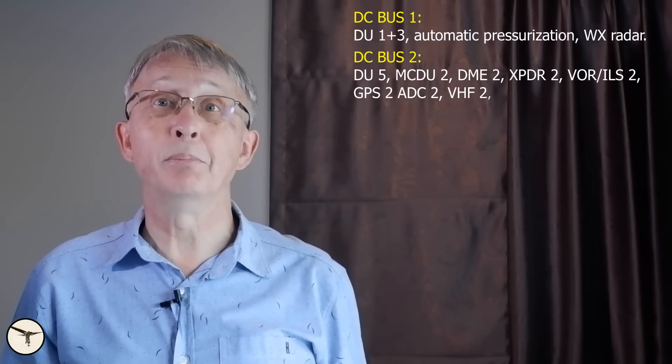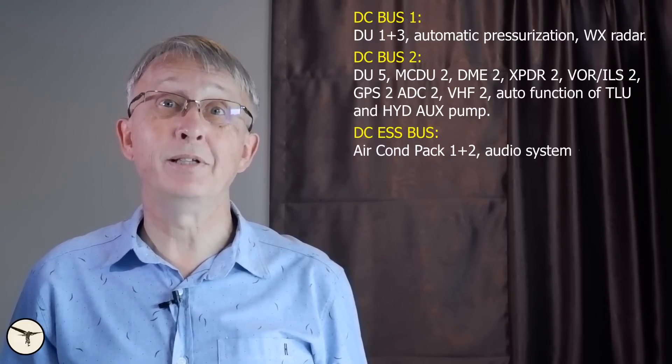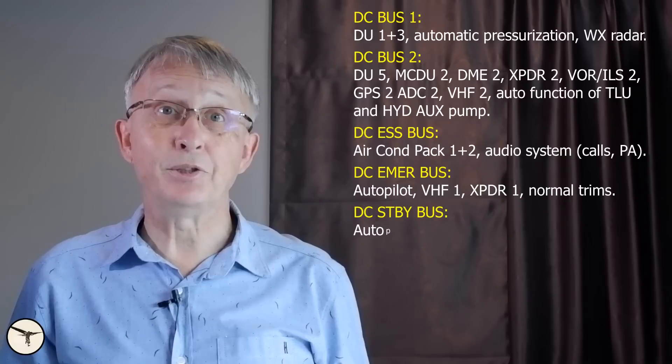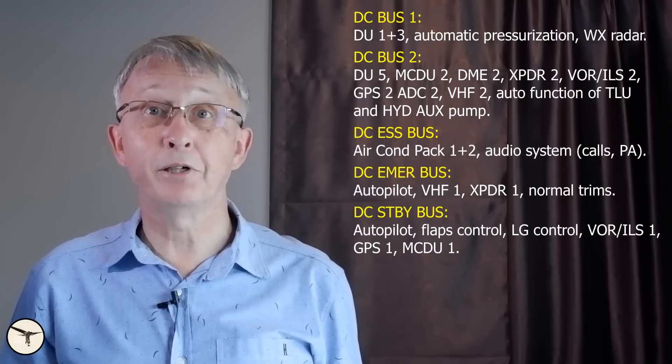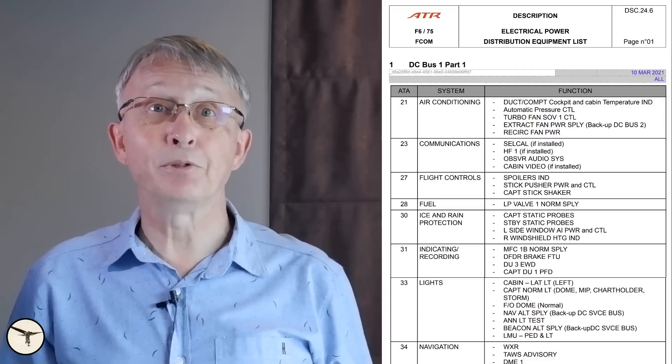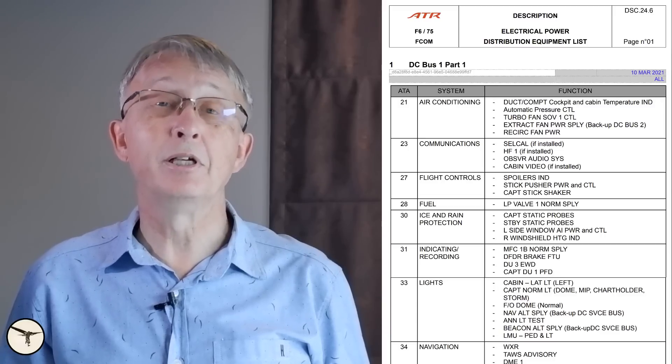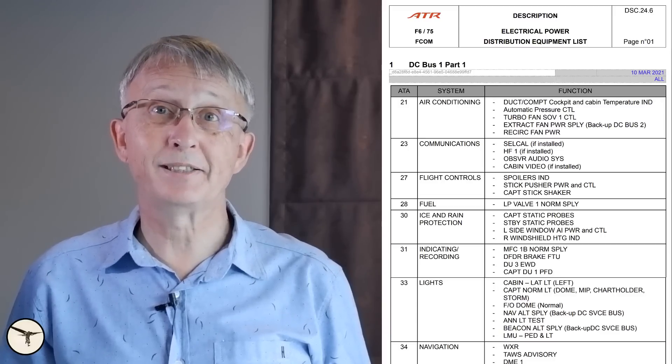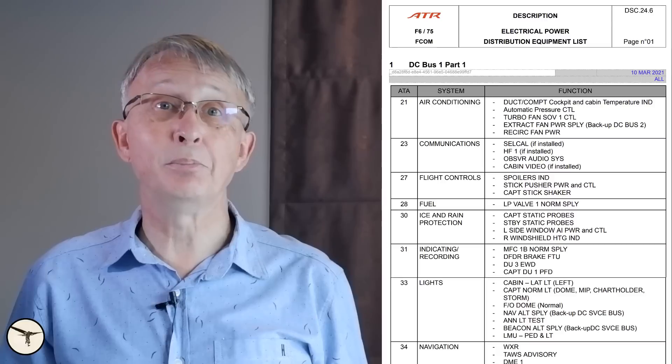At the beginning of this video, I promised to share a tip with you. And here it is. This is a list of some systems powered by the most prominent DC buses in the ATR. They are easy to identify or they require special attention from the flight crew. A complete list is found in AFCOM description chapter 24-6 electrical power distribution equipment list. And the procedures are found in the quick reference handbook.